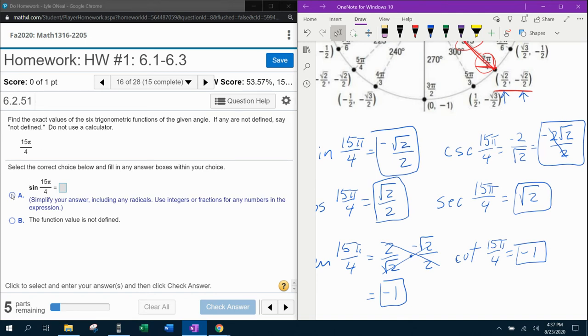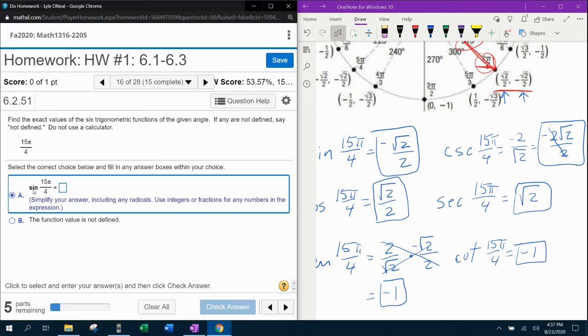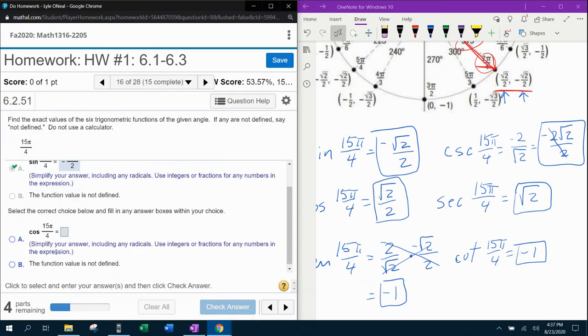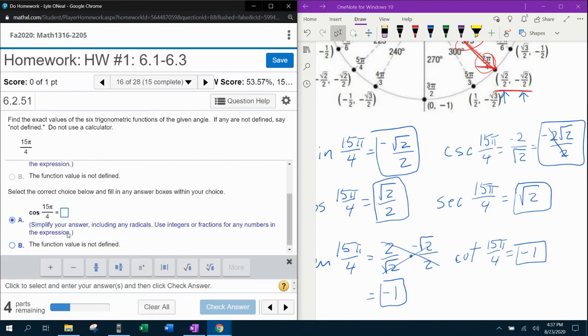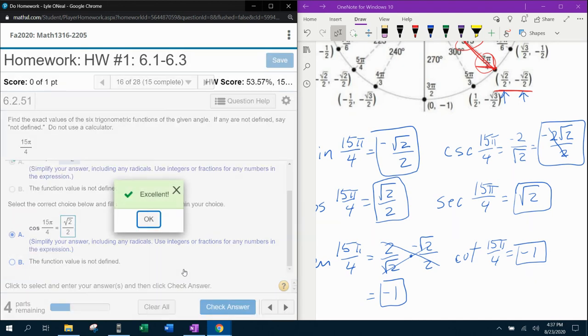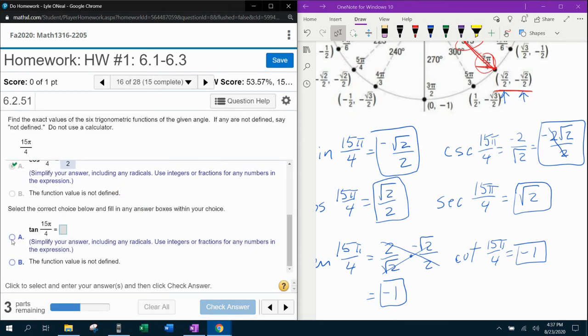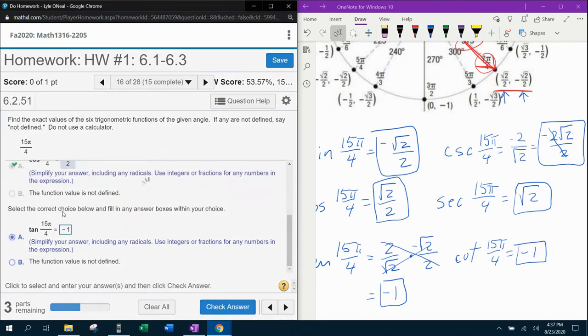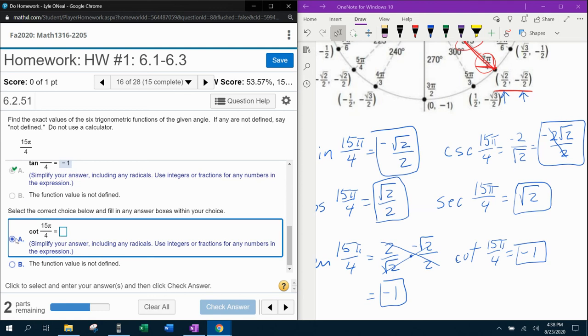Let's see if we're right. So answer A, sine of 15π over 4, that was negative square root of 2 over 2. Cosine was square root of 2 over 2. Tangent, negative 1.